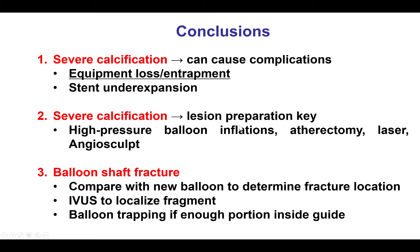Other options are high-pressure balloon inflations with and without buddy wires, using an angiosculpt, or using the laser. We don't want to use laser with contrast if there is no stent in place, except in very rare circumstances. What to do if equipment fractures like a balloon in this case: the key consideration is to understand how much of the equipment is inside the vessel and how much is outside. One way is to compare with a new balloon or the lost equipment. The other way is to use intravascular ultrasound. If the balloon fragment is sufficiently inside the vessel, the simplest way to remove it is to advance a balloon next to the piece, inflate that balloon inside the guide catheter — essentially trapping the fractured part against the wall of the guide catheter — and then slowly remove everything en bloc outside the body.